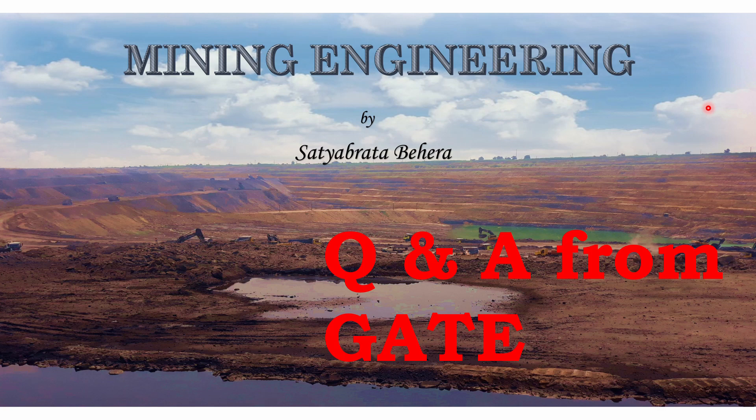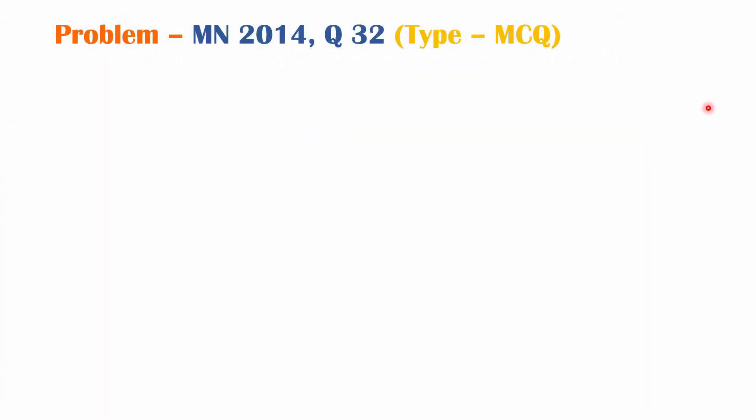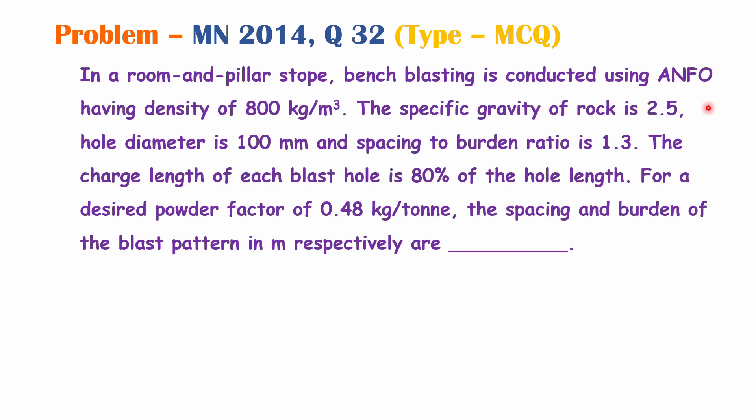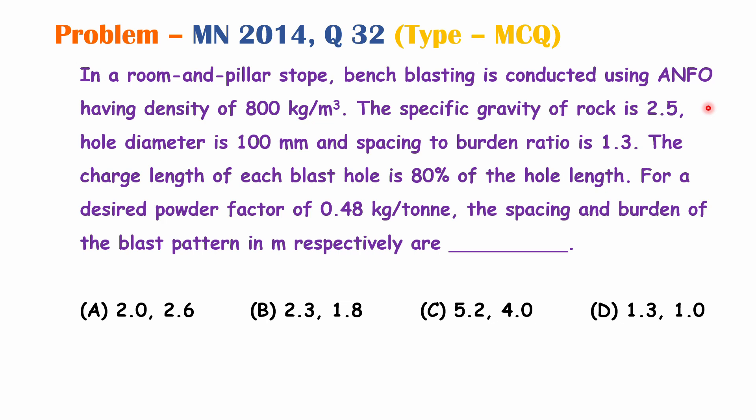Hello everyone, welcome back to the channel Mining Engineering. I am Satyabrata. Today we will solve some questions from the GATE question paper. Question number 32 from the 2014 GATE question paper: In a room and pillar stope, bench blasting uses explosive having density of 800 kg/m³. The specific gravity of rock is 2.5, hole diameter is 100 mm, and spacing-to-burden ratio is 1.3. The charge length of each blast hole is 80% of the hole length. For a desired power factor of 0.48 kg/ton, find the spacing and burden of the blast pattern in meters respectively.